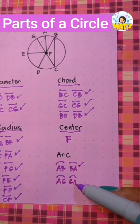We can have arc AB as part of circle F, or BA. They can be interchanged.